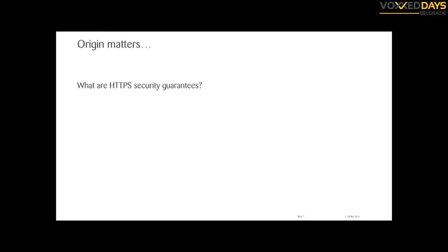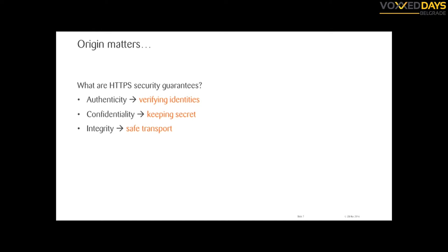That's why HTTPS comes to the rescue. With HTTPS you have three security guarantees. The first is identification: you want to know the origin of the code you execute. The second is confidentiality — encryption — you want to keep secret the information you send over the network. And third is integrity: you can ensure that no data is added, deleted, or modified during transport.